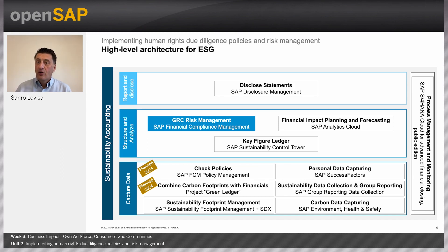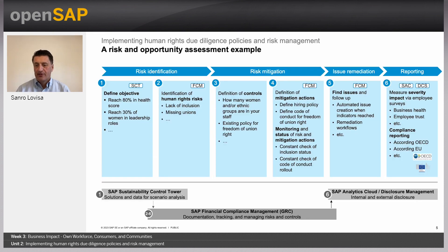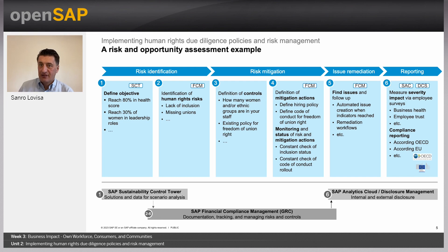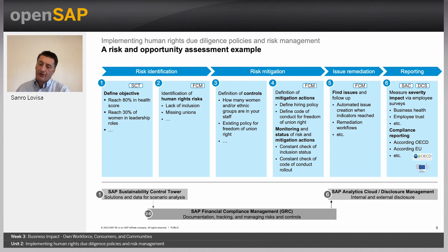When we talk about risk management, we talk about a process. The first step is risk identification, where you build up a risk catalog. Then you have a risk mitigation step, where you define activities to mitigate potential risks identified. You may also have an issue and remediation process step — if mitigation actions fail, you would like to remediate the discovered issues. And last but not least, you have a reporting requirement where you document and report the risk status.